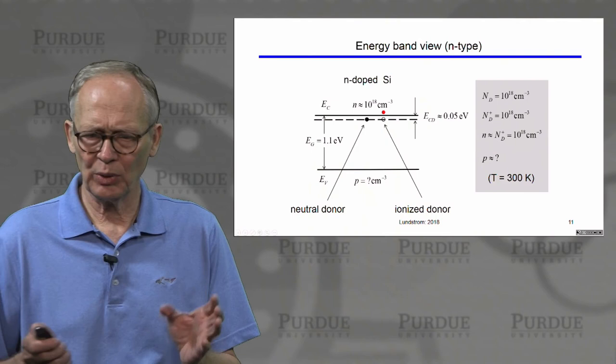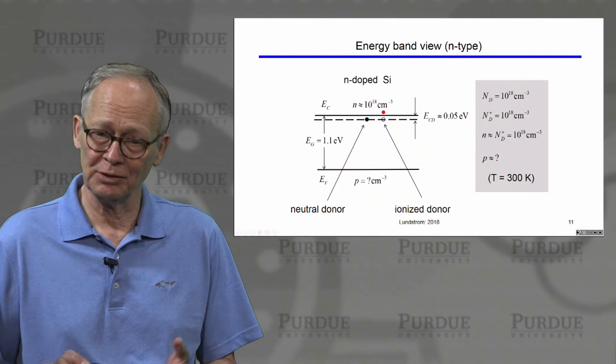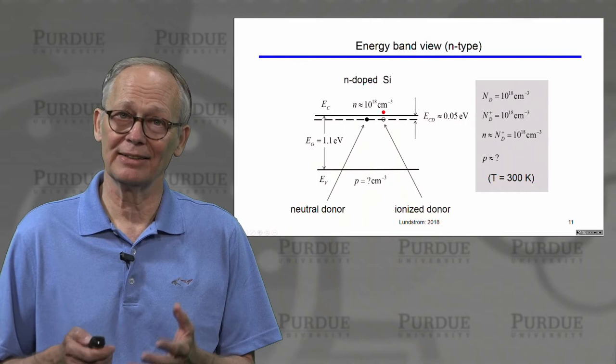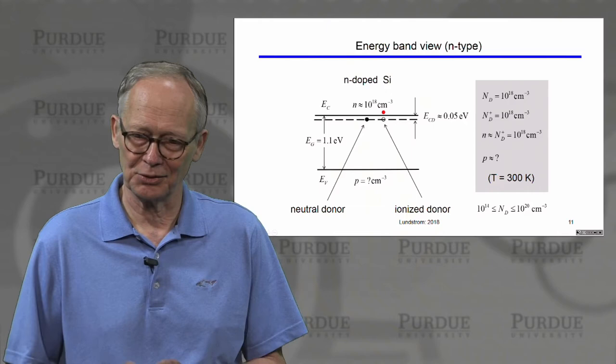We might ask, what is p — the hole concentration? We haven't changed anything in the valence band. P was 10¹⁰ per cubic centimeter to begin with. Interestingly, it's actually even lower than that, and we'll talk about how to compute it later in the course.